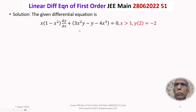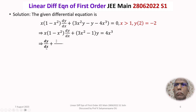Now we rewrite this differential equation: x(1 - x²)(dy/dx) + (3x² - 1)y = 4x³ — that means between those two terms y is taken common, and we have shifted -4x³ from the left-hand side to the right-hand side so it becomes 4x³. Dividing throughout by x(1 - x²), it becomes dy/dx + [(3x² - 1) / (x(1 - x²))]y = 4x³ / [x(1 - x²)].